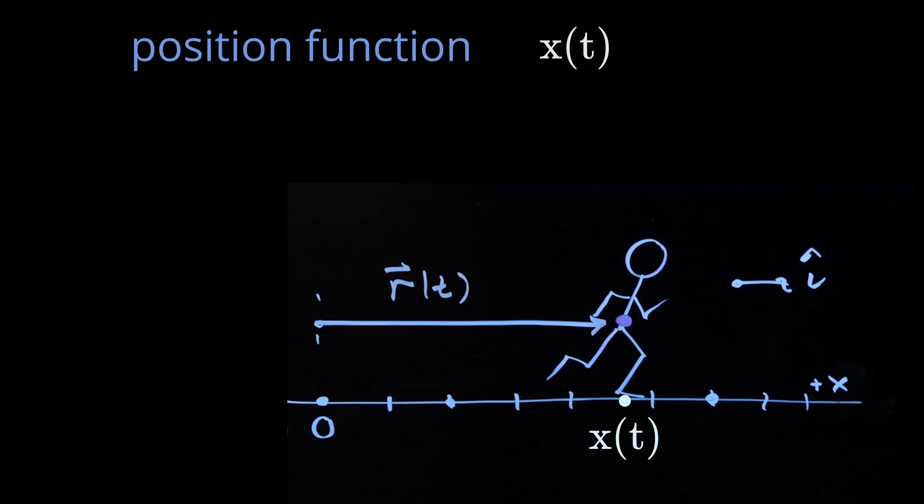This is a function that will change in time. And our position vector is r of t equals the position function x of t. Now remember, this is a vector. The position function is just a quantity that's describing the location of this point with respect to the origin. But the unit vector is how we describe this as a vector.